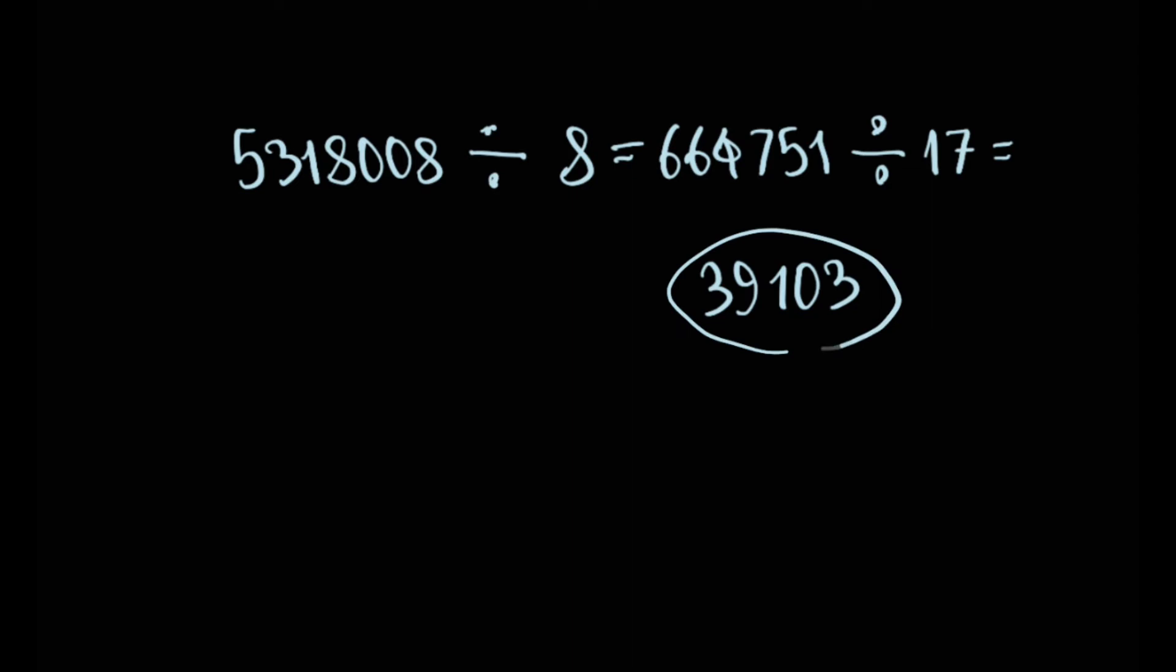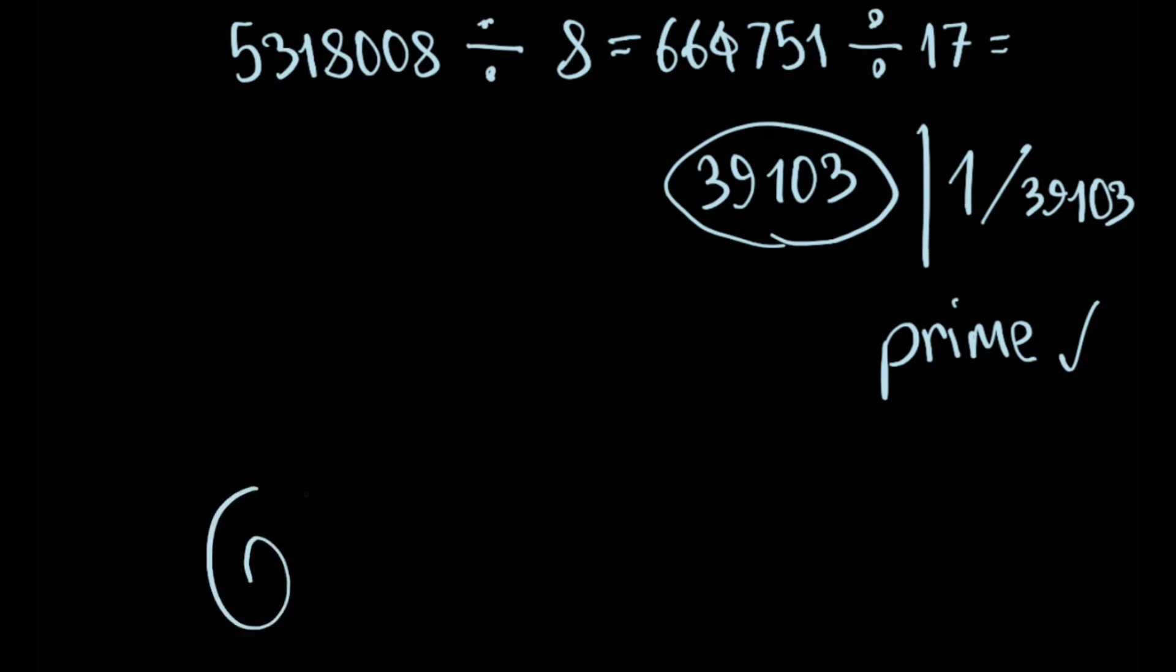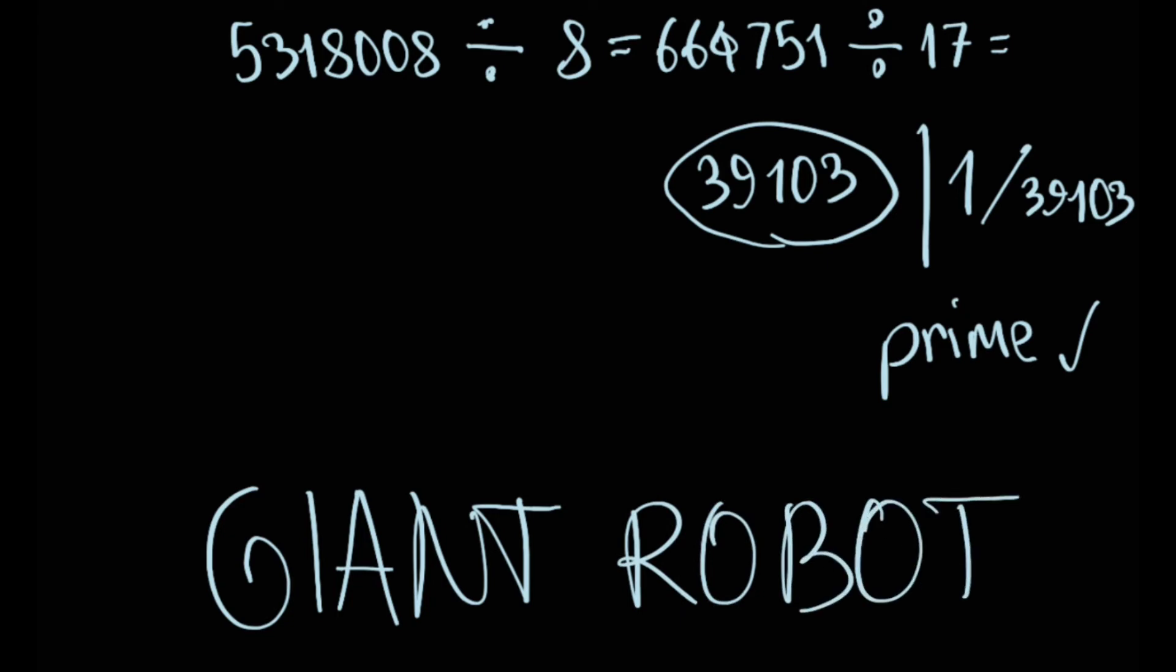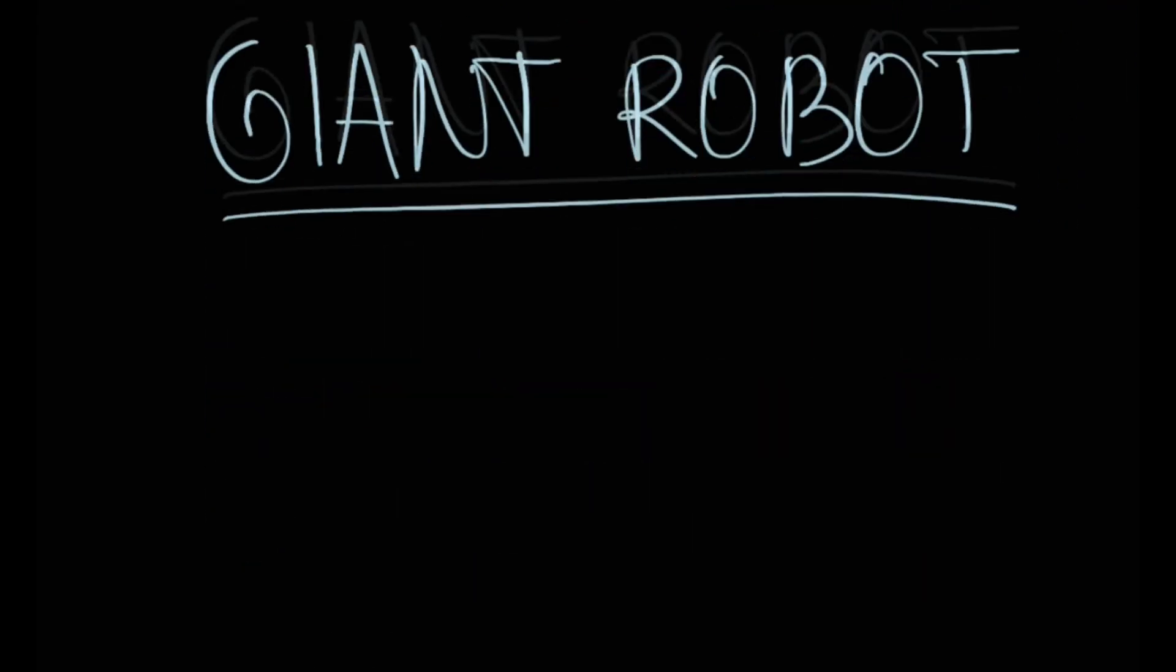Now, 39,103 is a prime number, meaning the only two numbers that could possibly divide it further are itself or the number 1. Great. Prime number. Prime. Optimus Prime. Giant robot. Keep that giant robot clause in mind. I think that it's going to prove useful in the future.